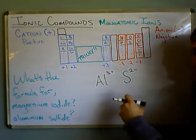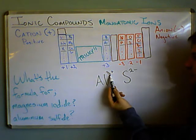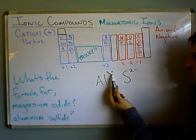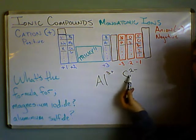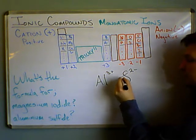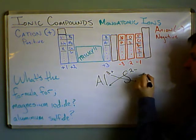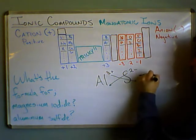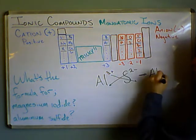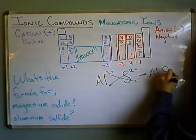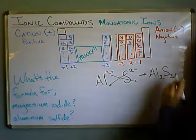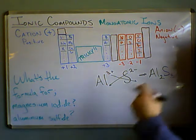So I'm looking at it. We have plus 3, minus 2. They're different charges. So I'm just going to swap them. This guy goes down here, this guy goes down here. And we get Al2S3. And there's my formula.